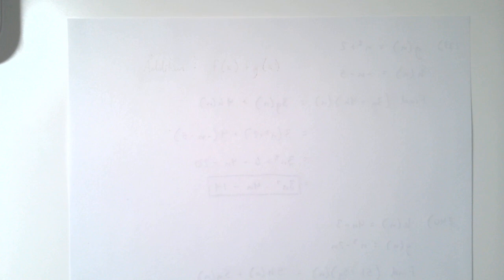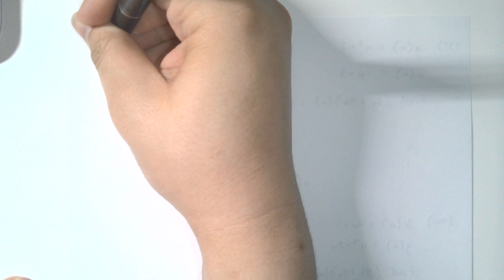Welcome back to the Algebra 2 final exam review. In this video we're going to cover section 17, and that's verifying whether two given functions are inverses. So let's look at number 241. But before we start with that, we need to know how do we verify whether two functions are inverses.